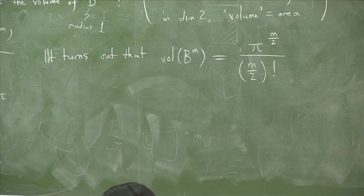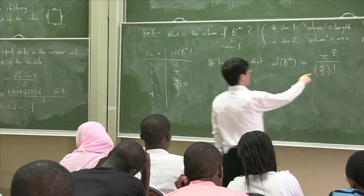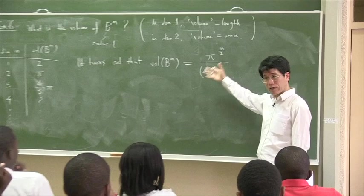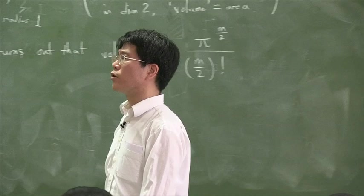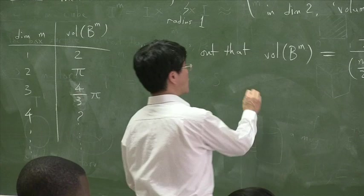Now, because you are all attentive, you are going to complain immediately. For example, Dina was going to complain. This factorial does not make sense. Because when m is even, I know what the factorial of an integer is. But suppose m is three. What does three over two factorial mean? You are going to complain, right?